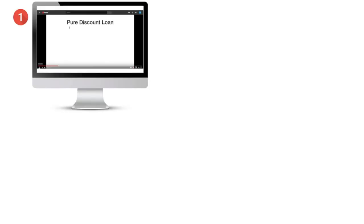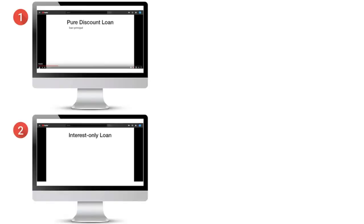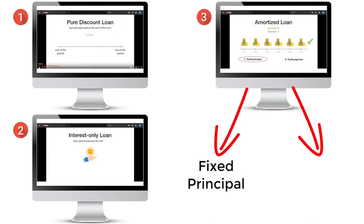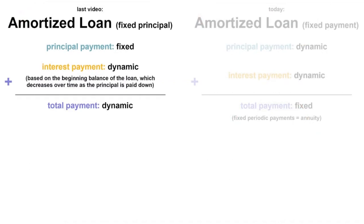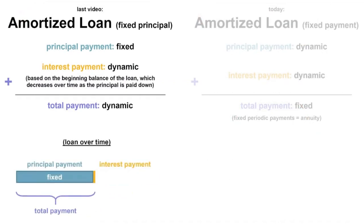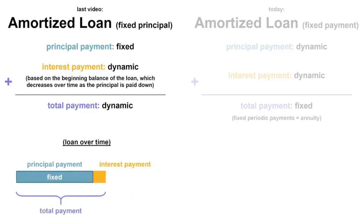In the previous video, we discussed the three types of loans: the pure discount loan, the interest only loan, and the amortized loan. The amortized loan was broken down into two types: fixed principal and fixed payment. We talked about the fixed principal amortized loan, where the payment of the principal amount is set in the loan agreement, and the interest payment decreases over time as the principal balance amortizes.